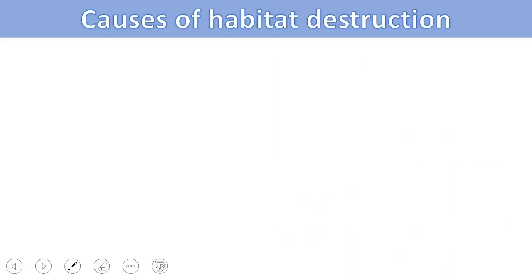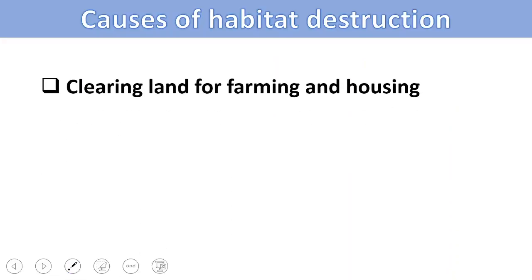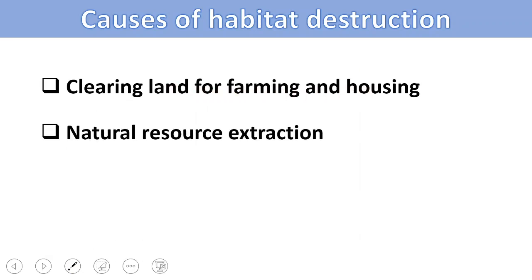So what are the causes of habitat destruction? The first on the list is clearing land for farming and housing, the second is natural resource extraction, and the third is marine pollution.